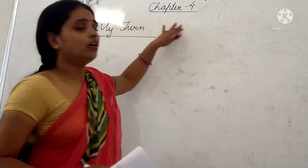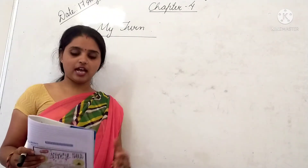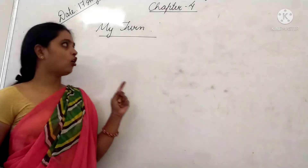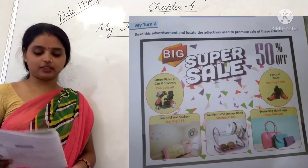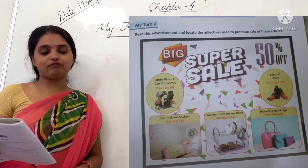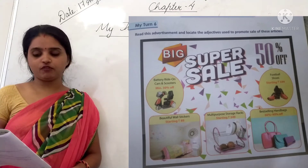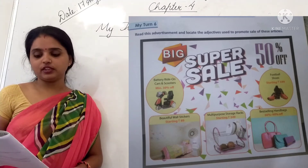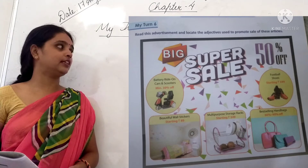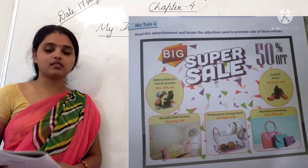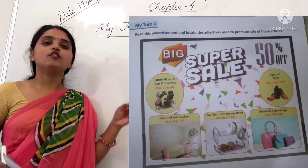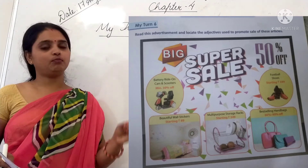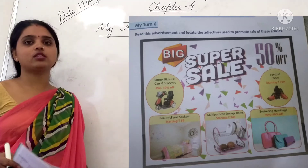I will explain My Turn 5 in the next class, but now let's look at My Turn 6. In My Turn 6 you can see a picture on the board. The task says: read this advertisement and locate the adjectives used to promote the sale of the articles. On the screen there are some articles with adjectives used to promote them in a sale.